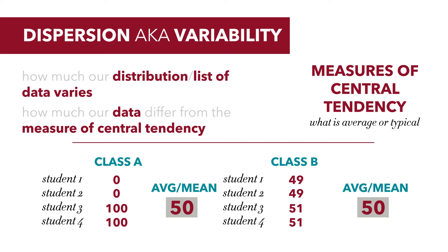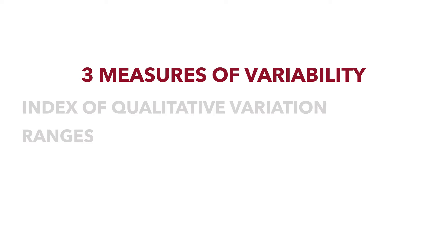But the distributions look very different. In class A, there's a lot of variability. The scores ranged from zero all the way to 100, whereas in class B, the scores had a very narrow range from 49 to 51. This is the concept of variability. We will discuss three measures of variability: the index of qualitative variation, ranges, and variance and standard deviation.